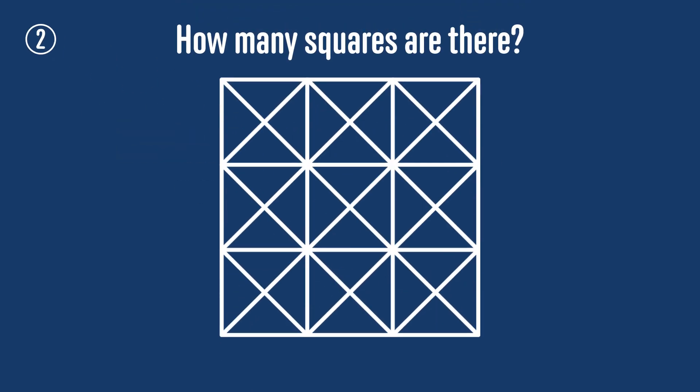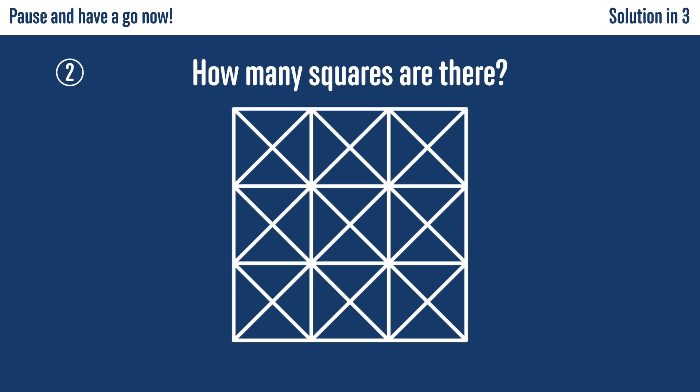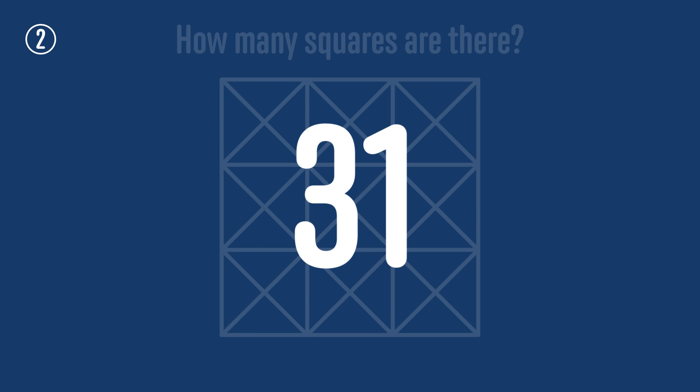How many squares are there in this diagram? Don't forget to count squares of all sizes and in all directions. The solution to this challenge is that there are 31 squares. Have another go if you missed any.